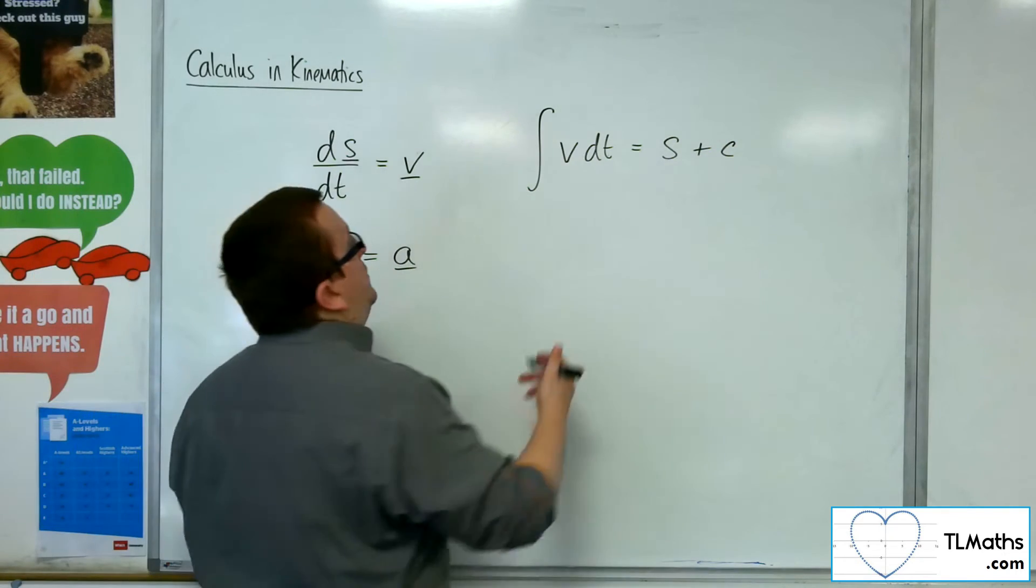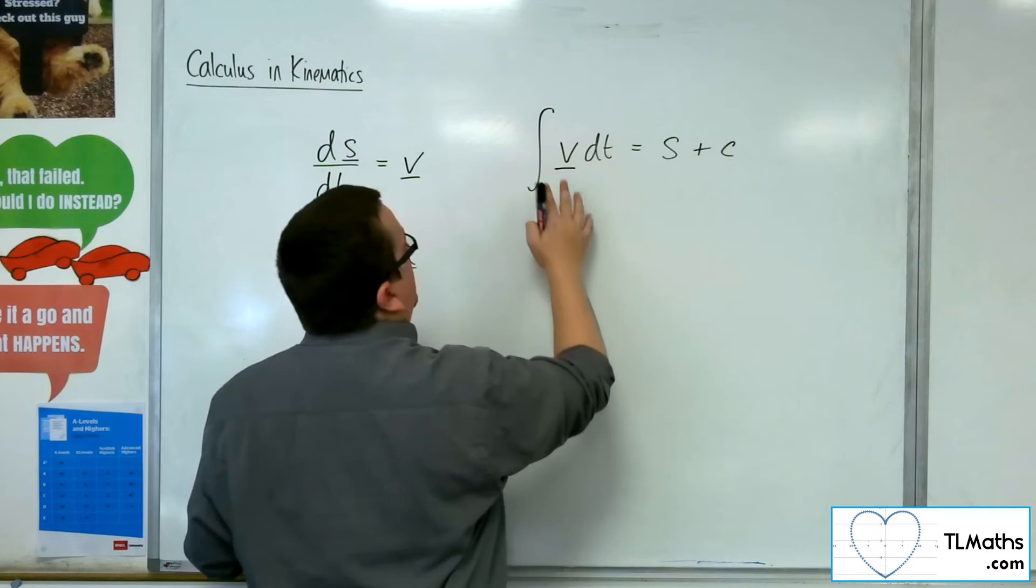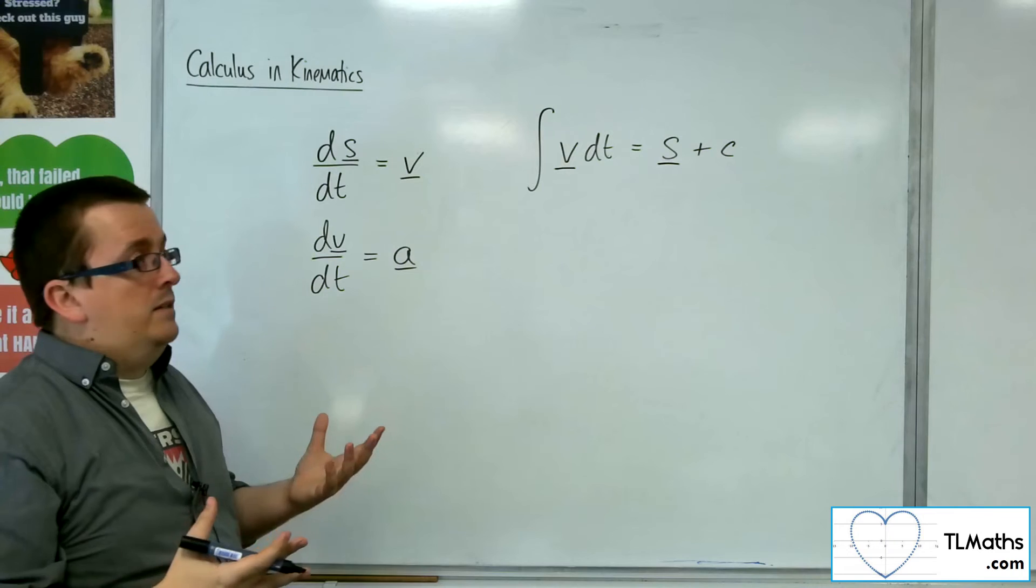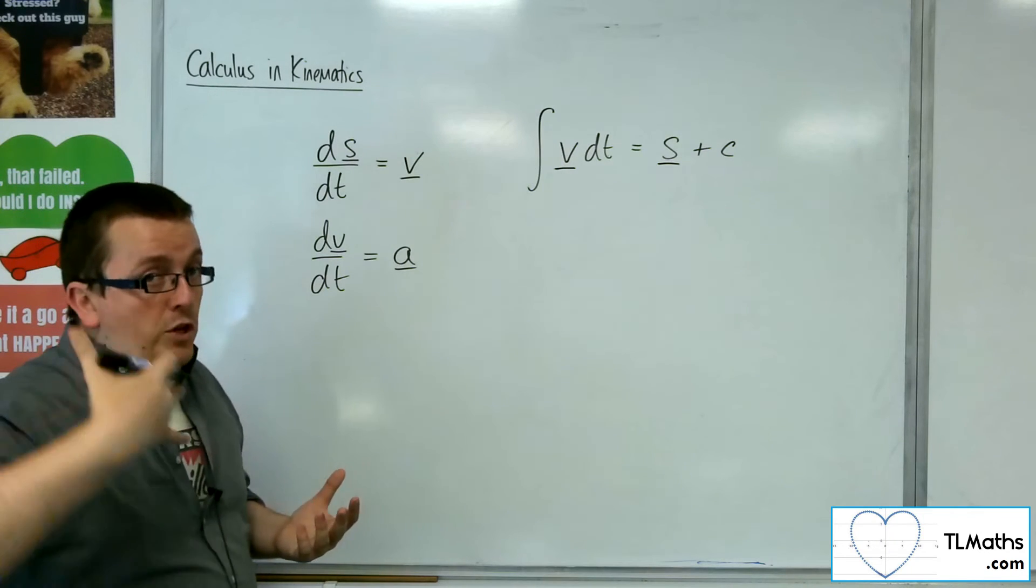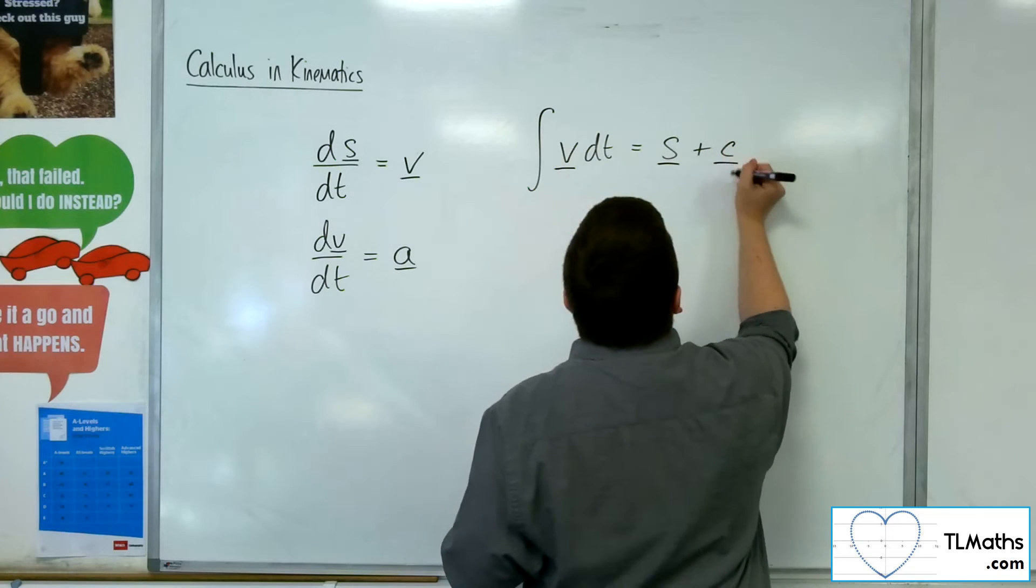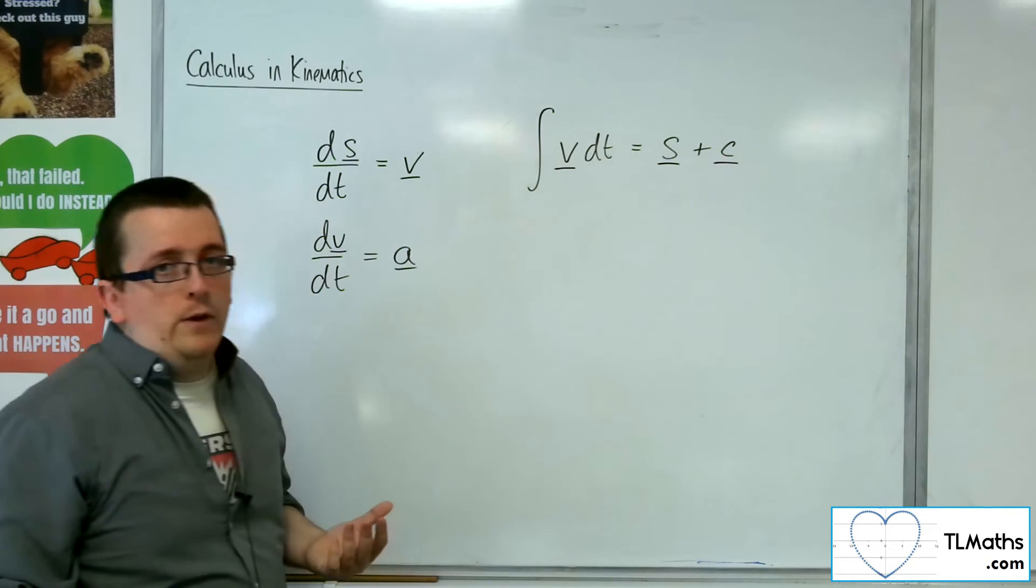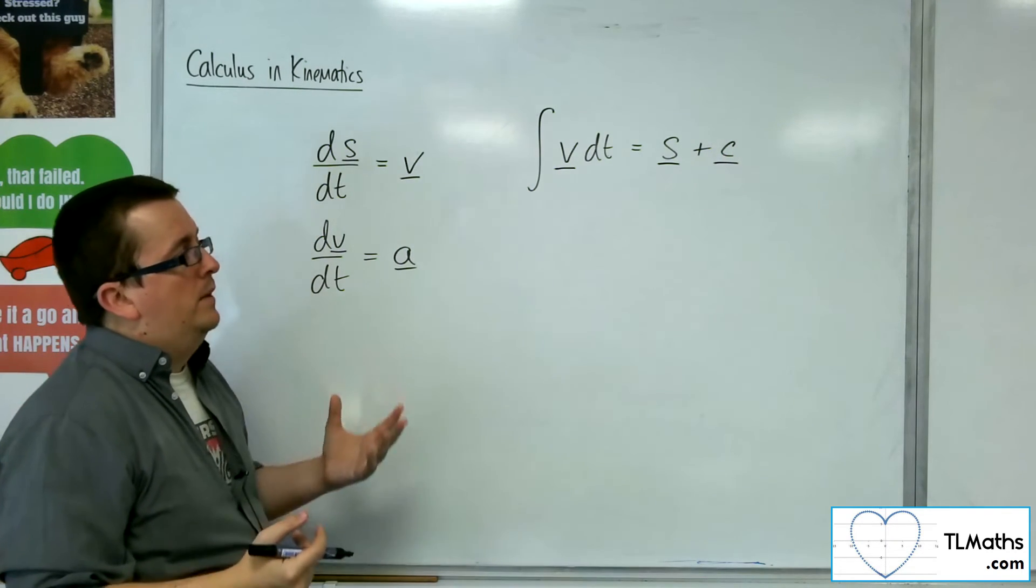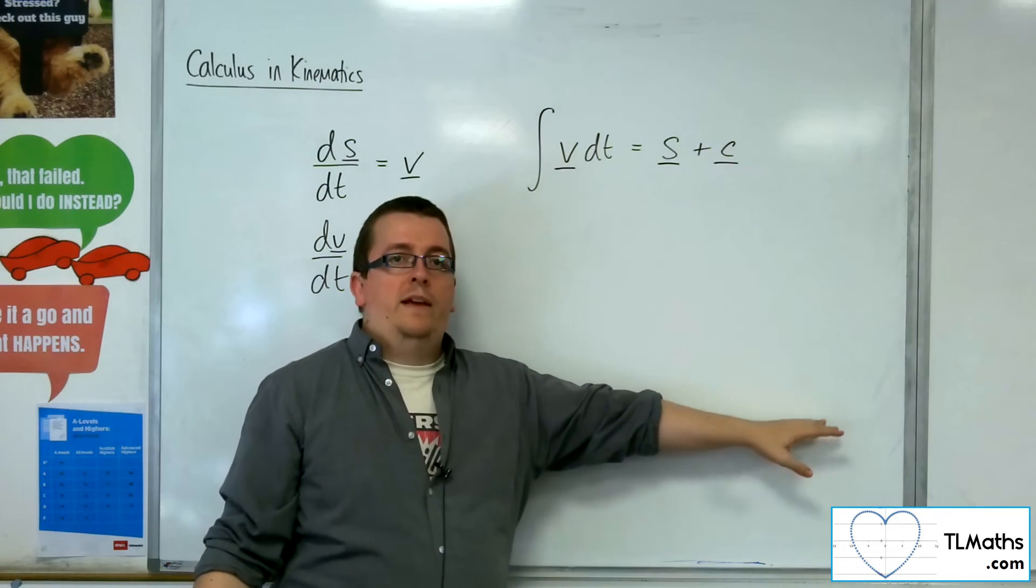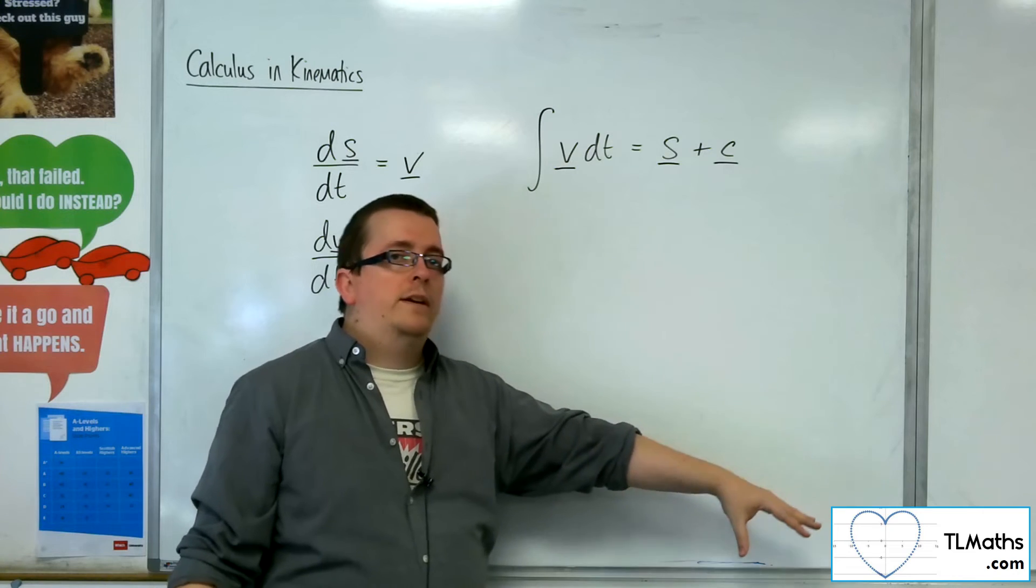When we go into vectors, the velocity will integrate to a displacement vector. But then the constant of integration will also be a vector. We're not just going to have something i plus something j plus something else that is dimensionless on the end. We can't have that.